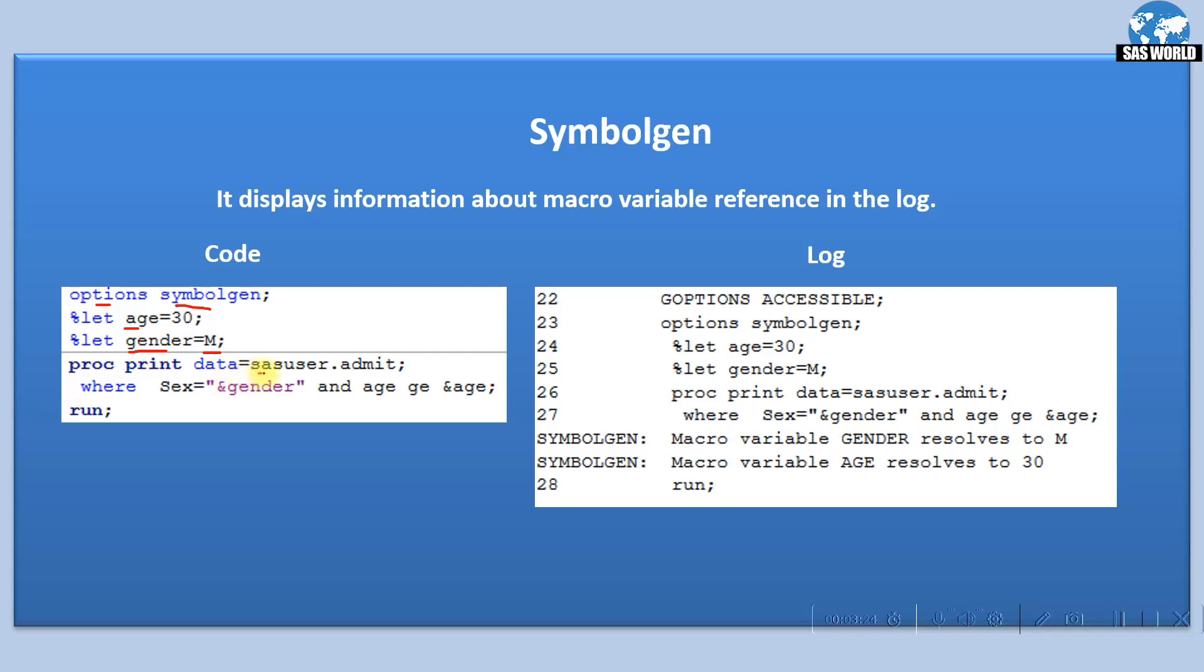Here is the example. We are enabling the symbolgen option and declaring the first macro variable, age equals 30, and second macro variable gender equals m. Then we are using proc print to print the sasuser.admit dataset, applying a where condition filtering using sex equal gender and age greater than or equal to the age macro variable. If you see the log with the text symbolgen, we have the macro variable values resolving to m for gender and 30 for age.